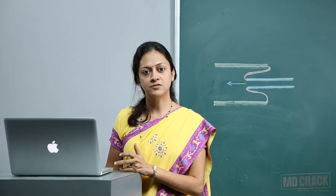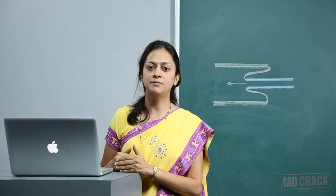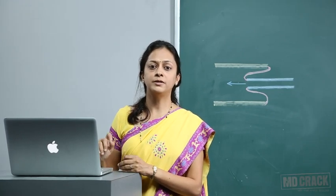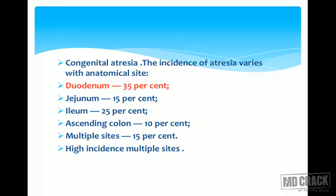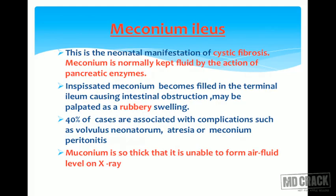The commonest question asked is which is the common type of atresia — the answer is duodenal atresia. It can also be seen in higher incidences at multiple sites. Meconium ileus is the neonatal manifestation of cystic fibrosis. Meconium is normally kept fluid by the action of pancreatic enzymes. Inspissated meconium fills the terminal ileum causing intestinal obstruction.